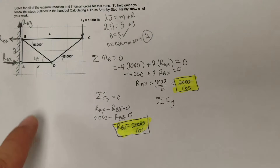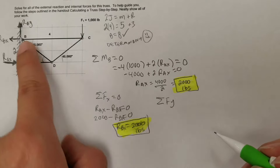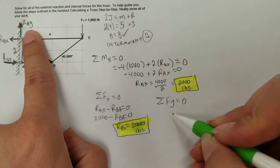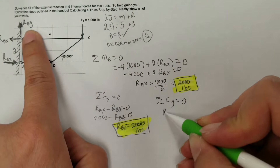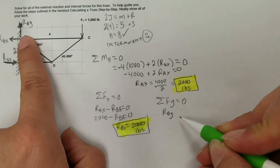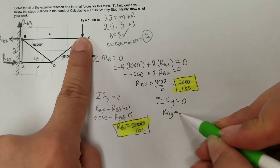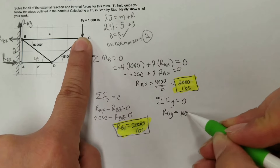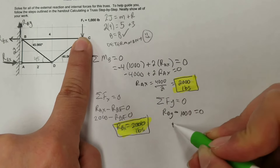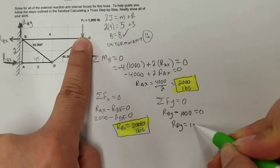For the sum of forces in the y-direction, the only forces are RBY going up (positive) and the 1000-pound applied load going down (negative). Setting the sum equal to zero: RBY − 1000 = 0, so RBY = 1000 pounds.